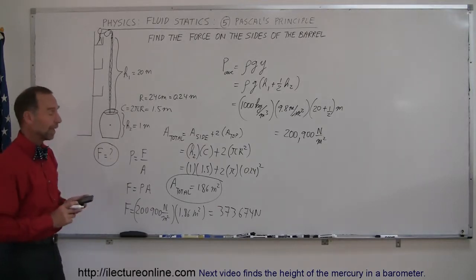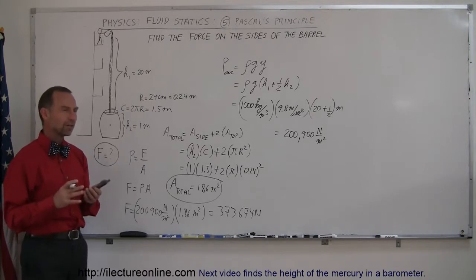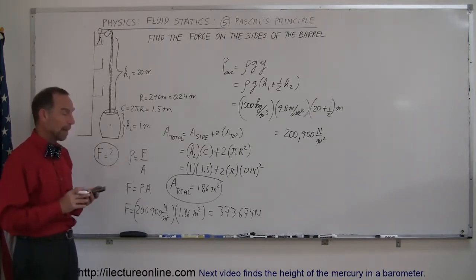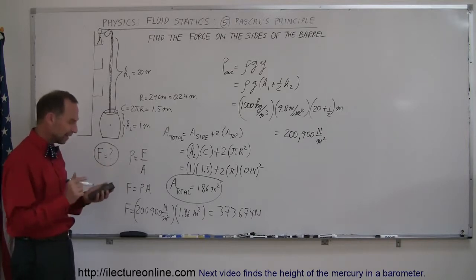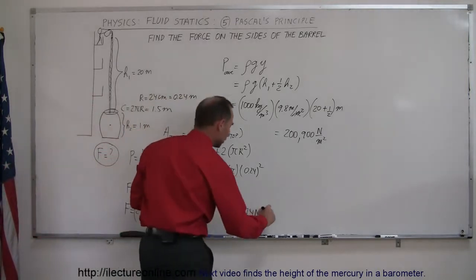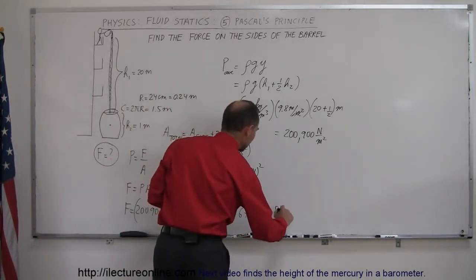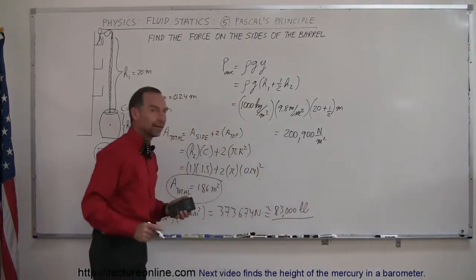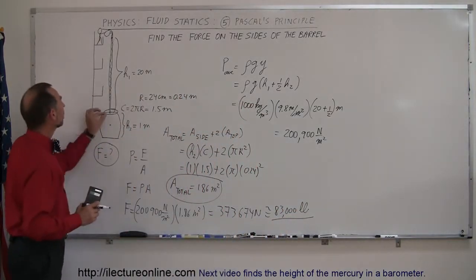How much is that? We don't have much of a concept of newtons—it's roughly about 4.5 newtons per pound. If we divide by 4.5, it gives us 83,000 pounds.